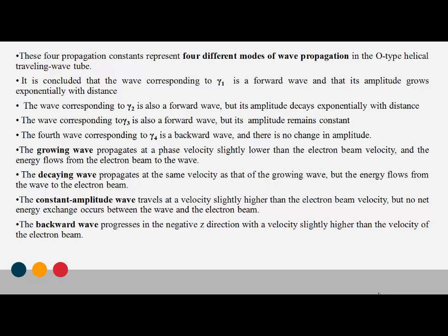The growing wave transfers energy from the electron beam to the wave, and it propagates at a phase velocity lower than the electron beam velocity. The decaying wave propagates at the same velocity as the growing wave, but energy is transferred from the wave back to the electron beam. The constant amplitude wave travels with a velocity higher than the velocity of the electron beam.